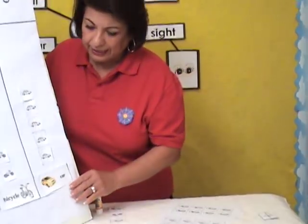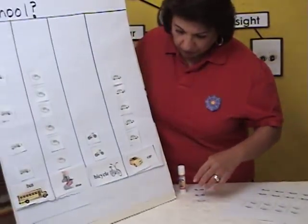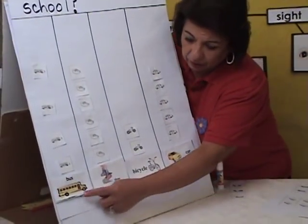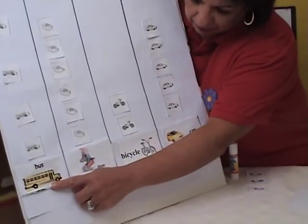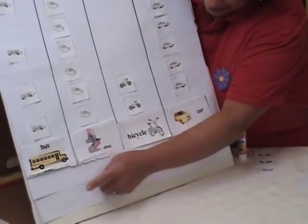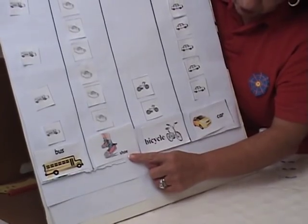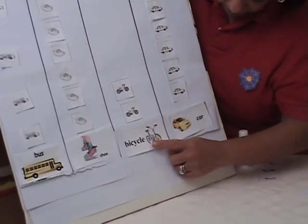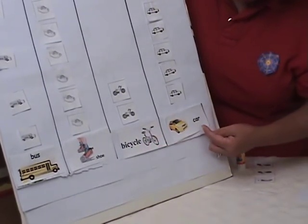We also need the picture cards. As you can see here on the graph, at the bottom we have the bus, the shoes, the bicycle, and the car.